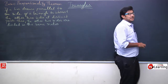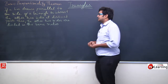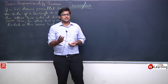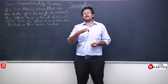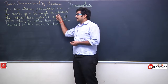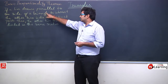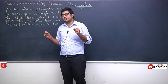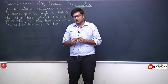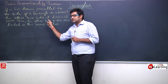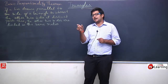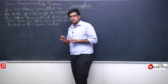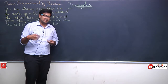Let us understand this statement. The statement says: if a line drawn parallel to one side of a triangle — a triangle has three sides — and if that line intersects the other two sides at two distinct points, then the other two sides, at which that parallel line is intersecting, are divided in the same ratio. That is, they are proportional.